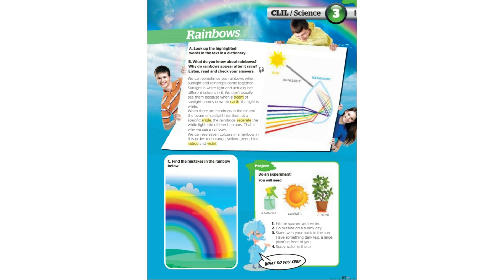Rainbows sometimes appear when sunlight and raindrops come together. Sunlight is white light and actually has different colours in it. We don't usually see them because when a beam of sunlight comes down to Earth, the light is white. When there are raindrops in the air and the beam of sunlight hits them at a specific angle, the raindrops separate the white light into different colours. That is why we see a rainbow.